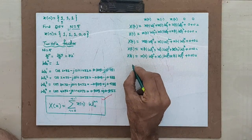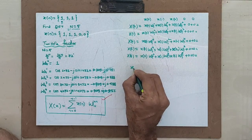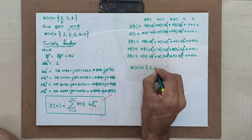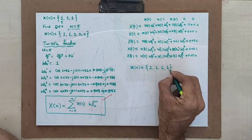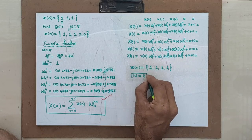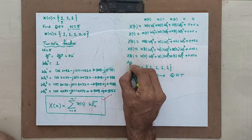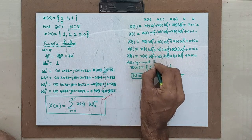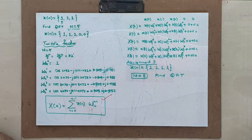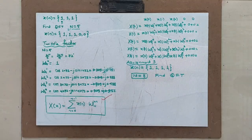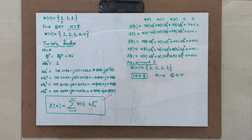I hope you understood the two methods for solving DFT. For the next assignment — Assignment 3 — take x of n equal to 1, 1, 1, 1, 1 and find the DFT for N equal to 8. You can use any method. Please submit the assignment so I can be confident you are following the lectures. Lectures will be only about 15 minutes, but please solve the examples given. If you have any doubts, contact me. Thank you.